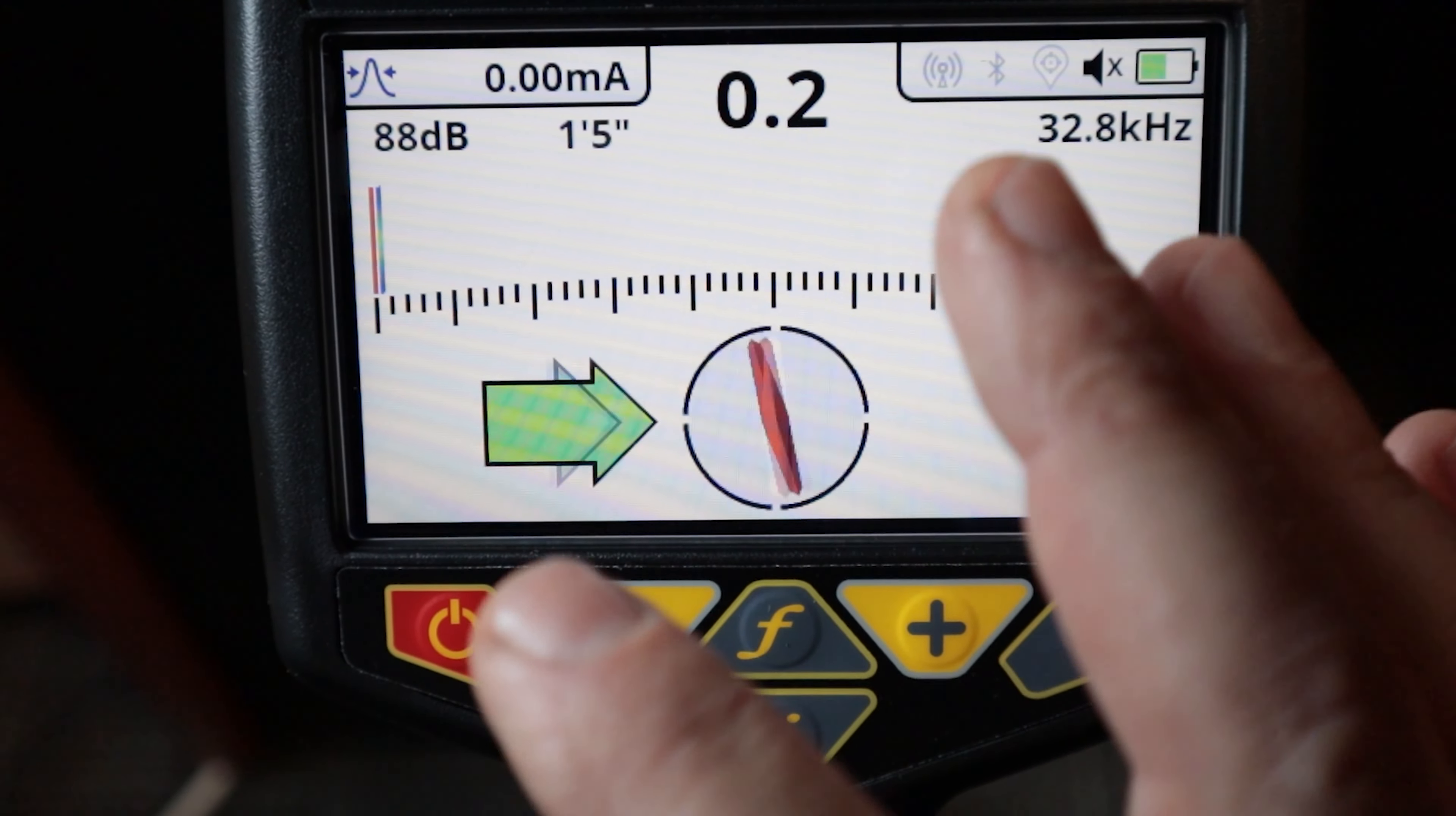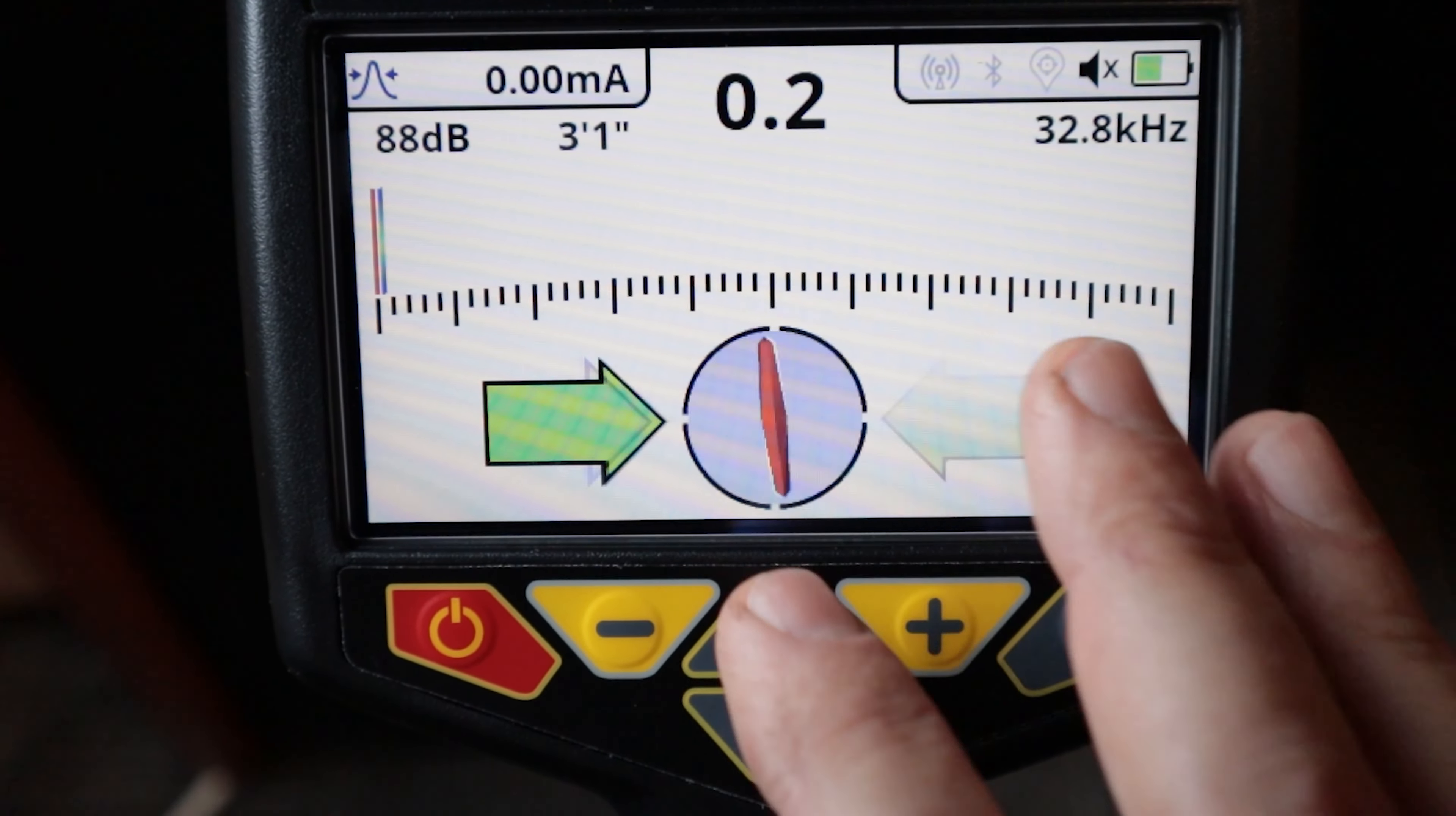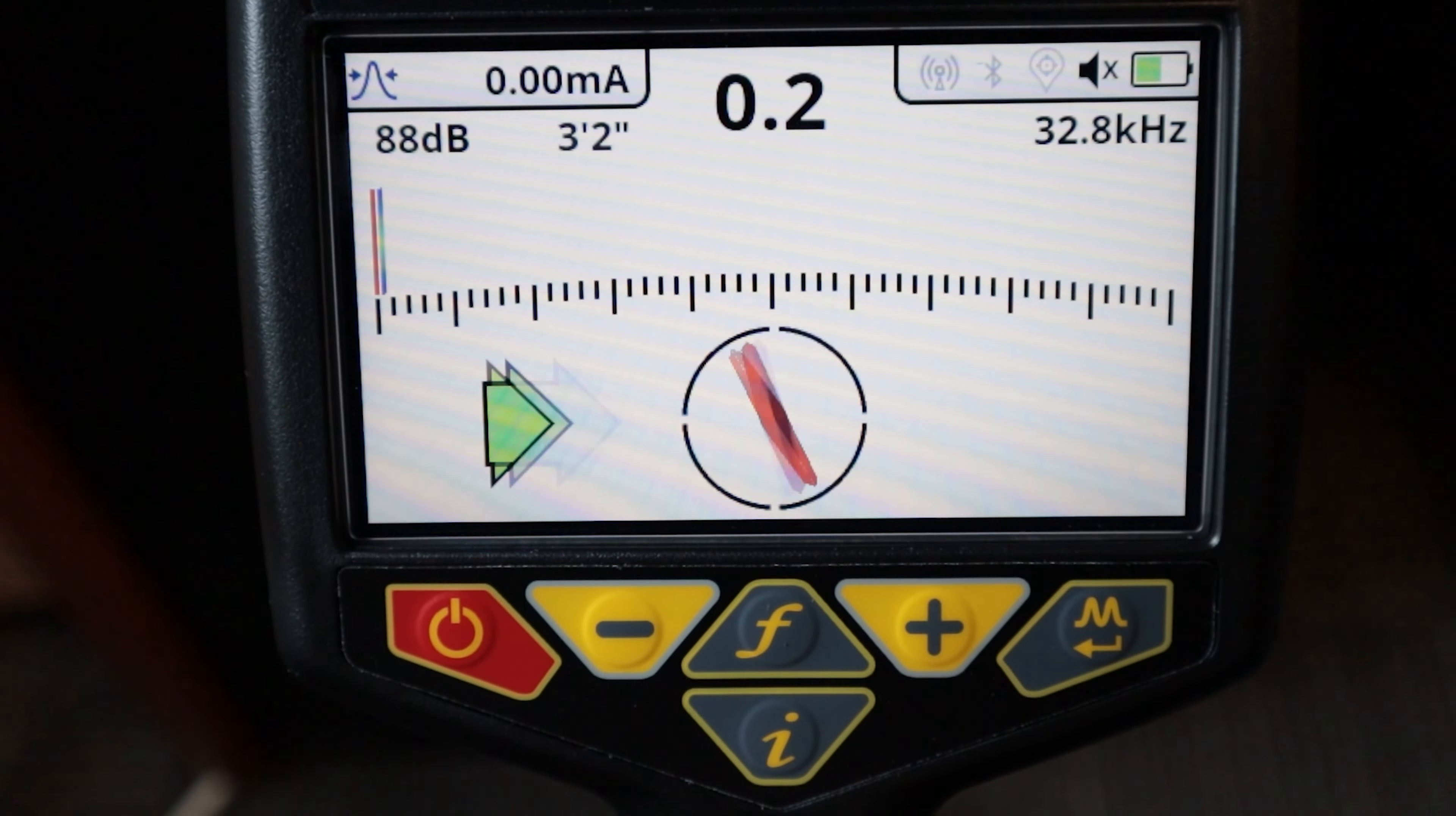Let's jump into our receiver. We're going to talk about the screens and the different functions and different ways that we can set this unit up. Obviously the first thing we're going to want to do is push the power button on, push and hold, and on comes your receiver.